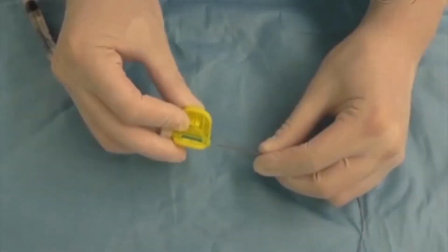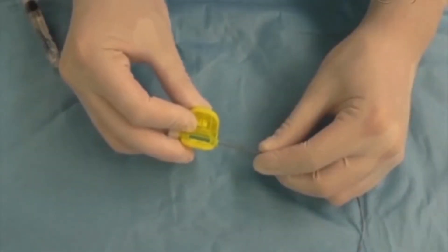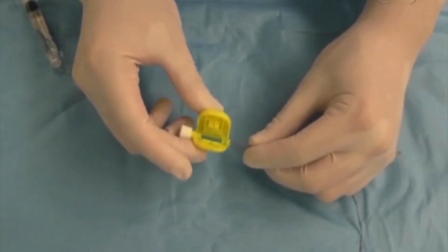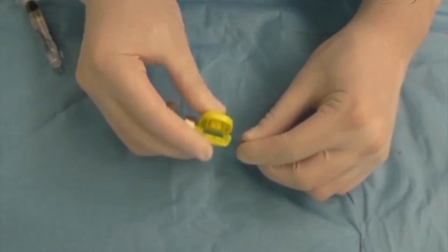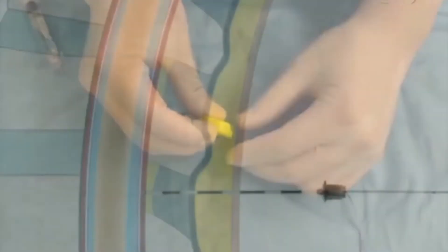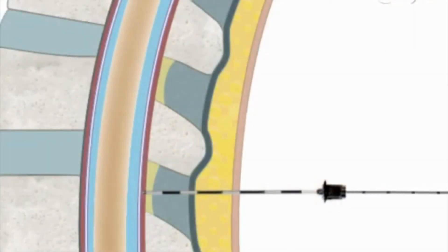For example, if the loss of resistance occurs at 5 centimeters, the catheter should be taped at the markings between 8 and 10 centimeters. Attach the hub to the distal end of the catheter, which stabilizes it and allows syringes to be attached.